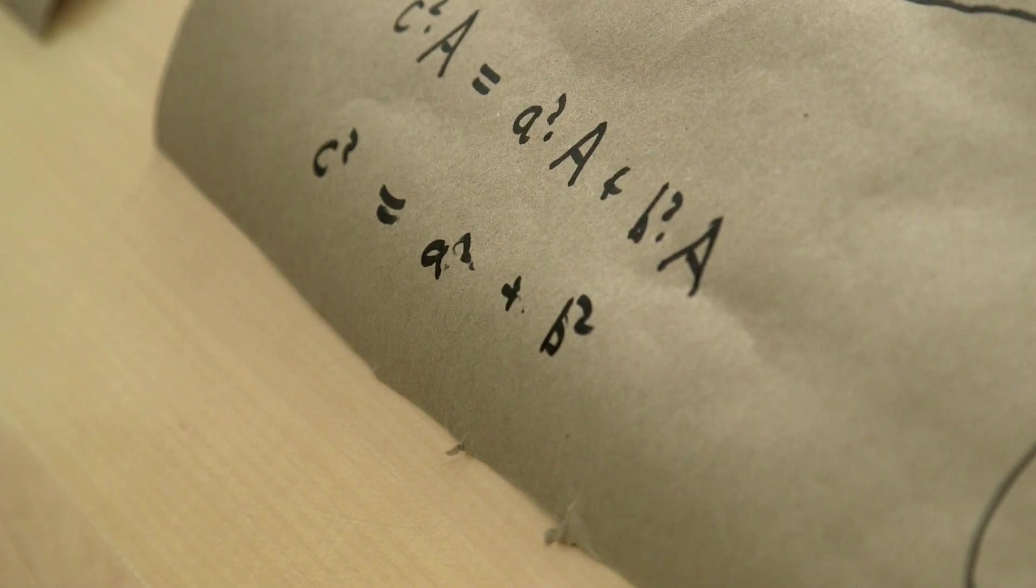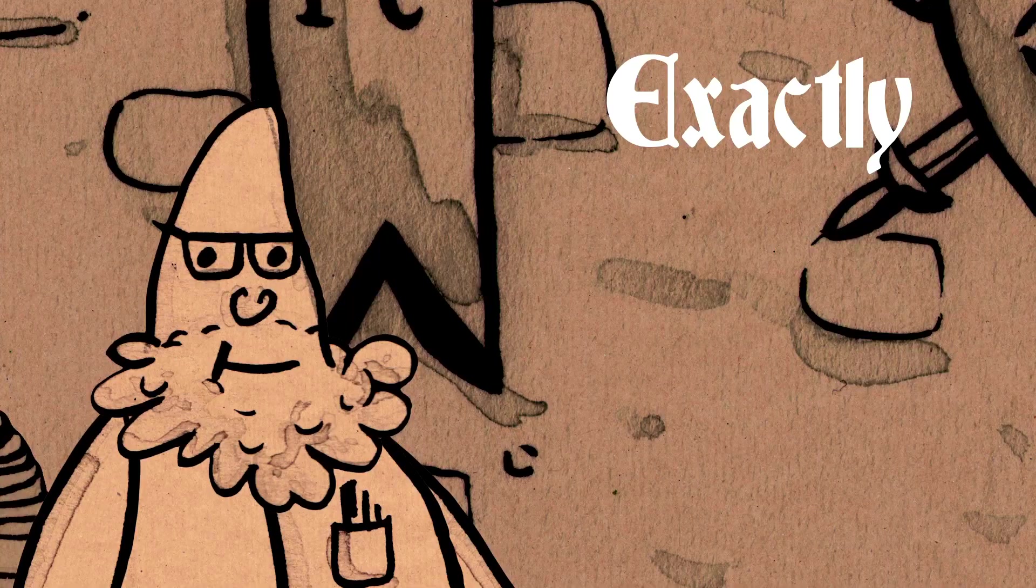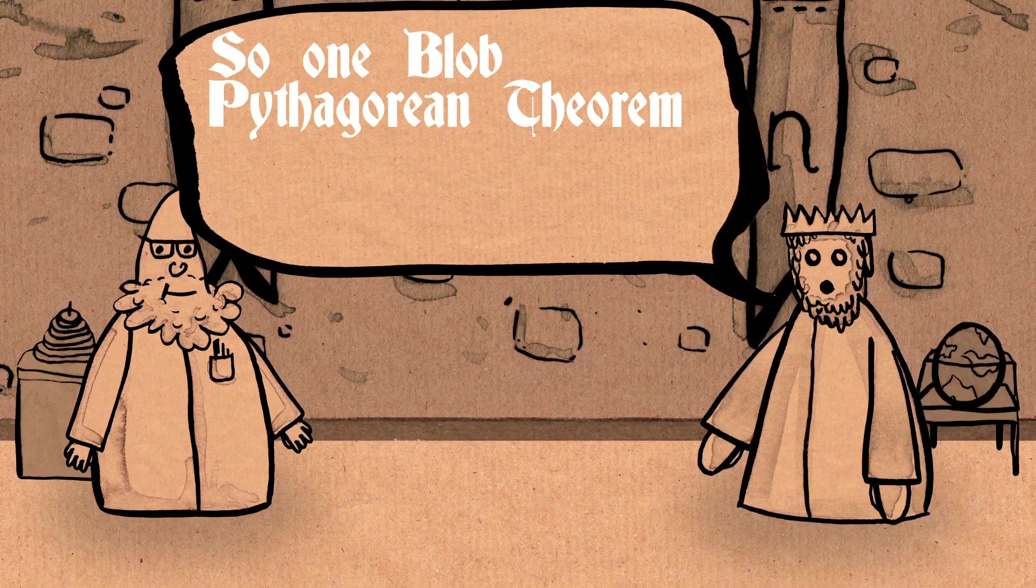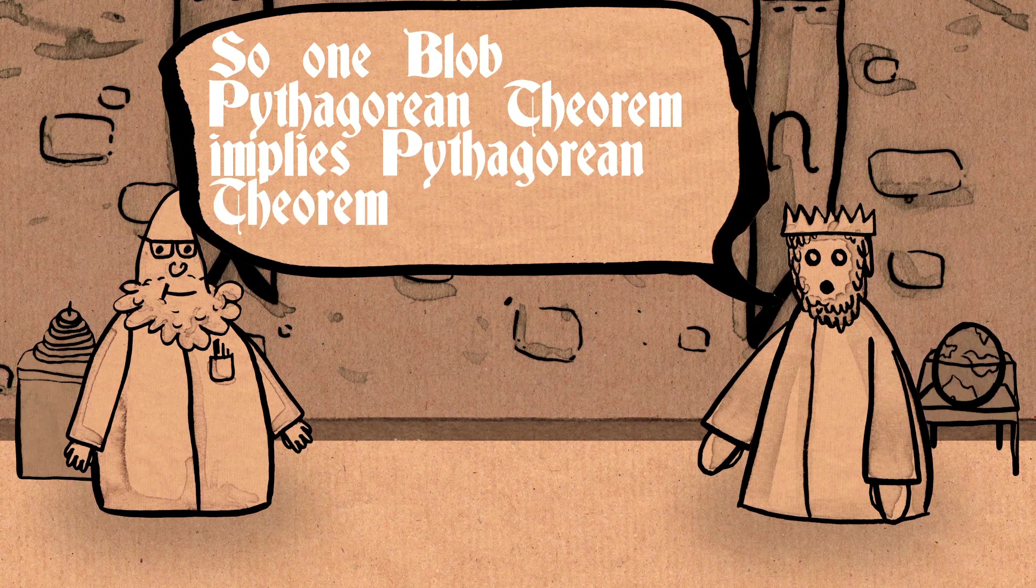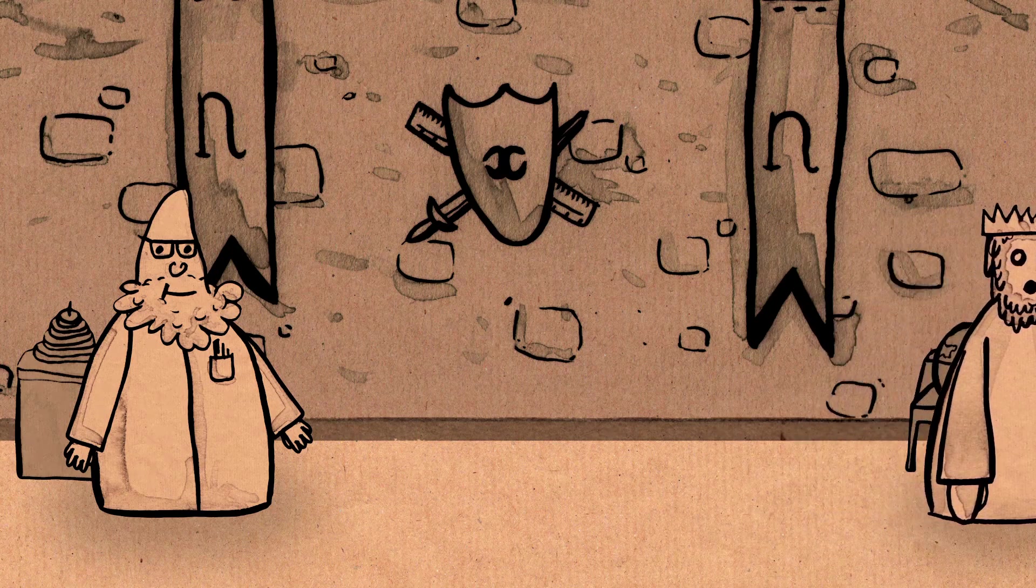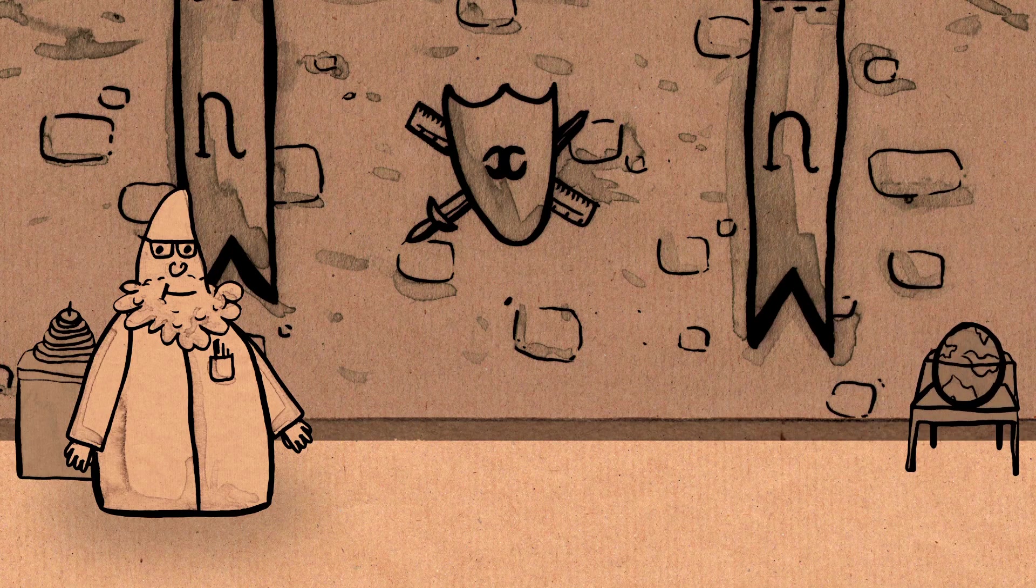And so, if you give me any other blob, I will get exactly the same result. So, one blob, Pythagorean theorem implies Pythagorean theorem for all blobs, says the king, and he leaves sort of contented.